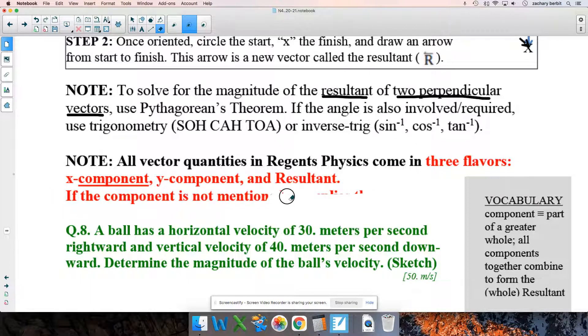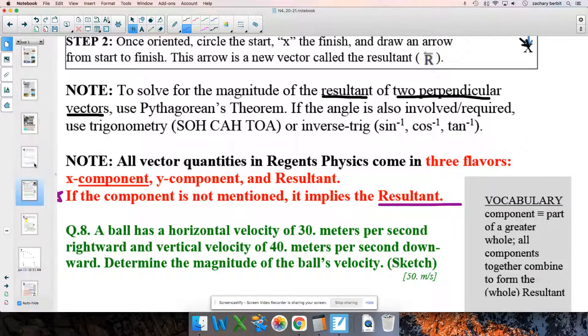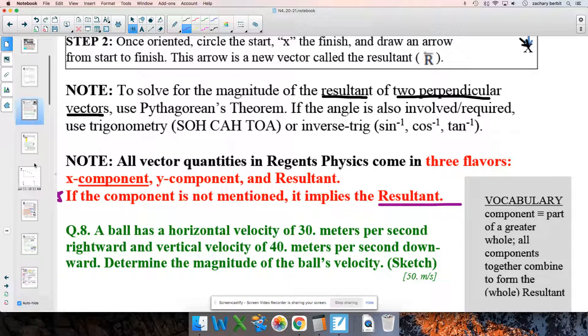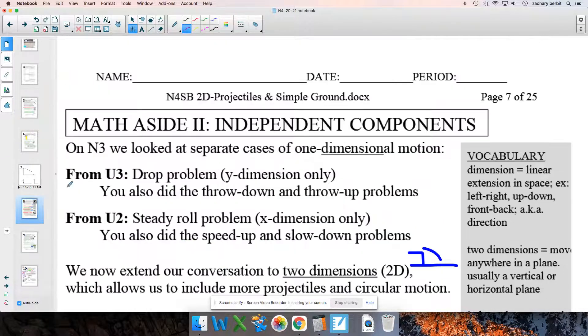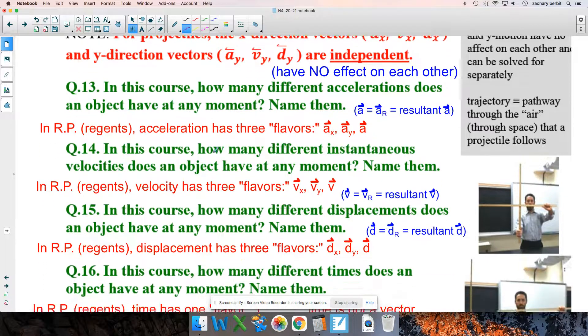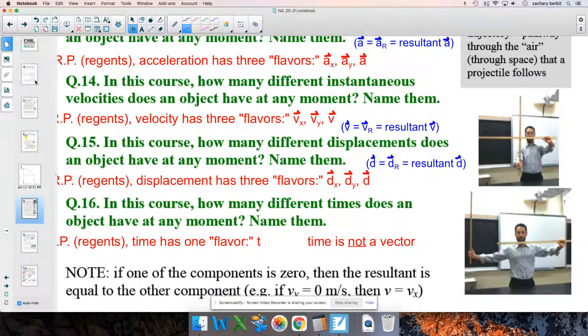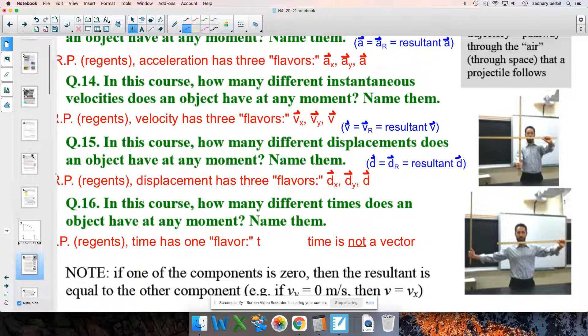As a reminder, if the component is not mentioned, it implies resultant. This is really an important point right here. If the component is not mentioned, it implies resultant. We talked about this on the page. Was it? Up over here on notes, page seven. We have those different flavors of acceleration, velocity, displacement, but not time. Time is not a bad thing. All right. Let's go back over here.